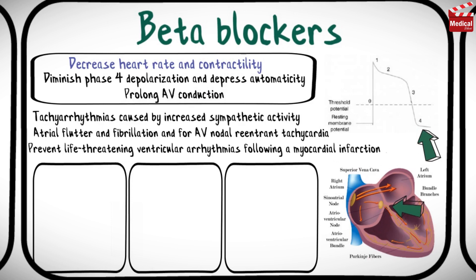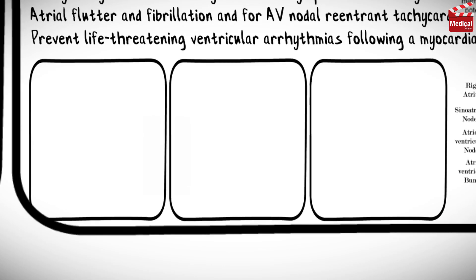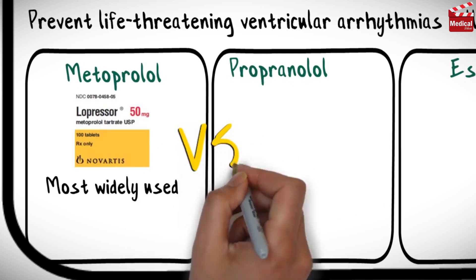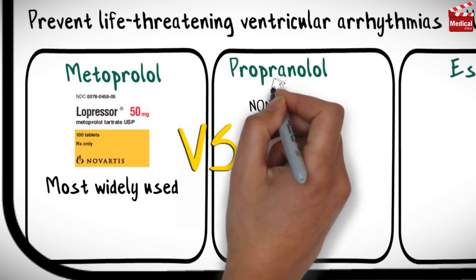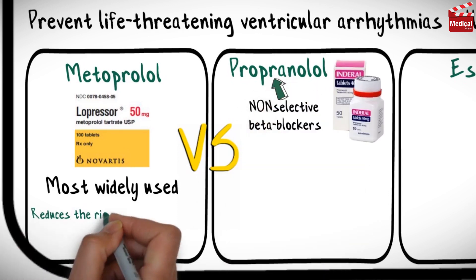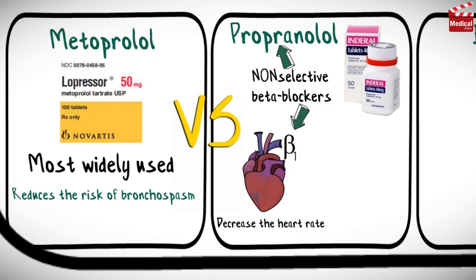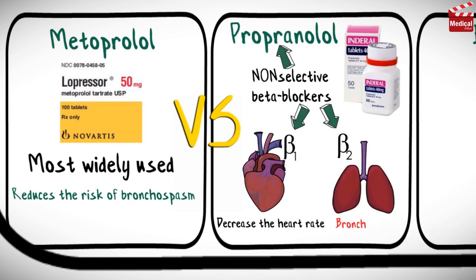They also prevent life-threatening ventricular arrhythmias following a myocardial infarction. There are three drugs to mention here: metoprolol, propranolol, and esmolol. Metoprolol is the most widely used beta blocker in the treatment of cardiac arrhythmias. Compared to non-selective beta blockers such as propranolol, it reduces the risk of bronchospasm, since non-selective beta blockers block both beta-1 receptors in the heart, decreasing heart rate, and beta-2 receptors in the lungs, causing bronchospasm.